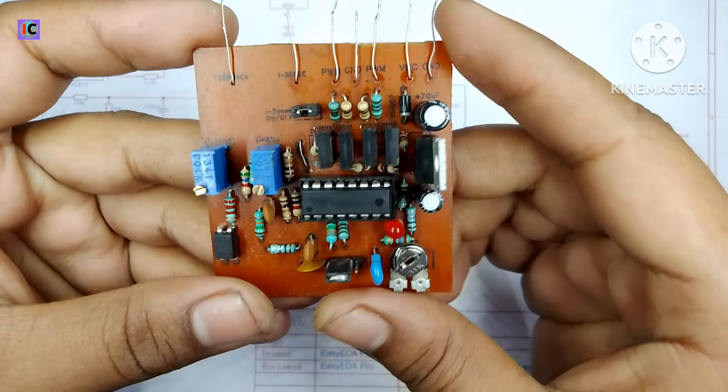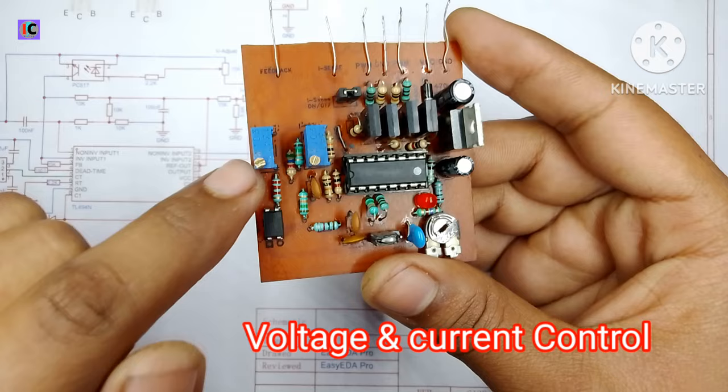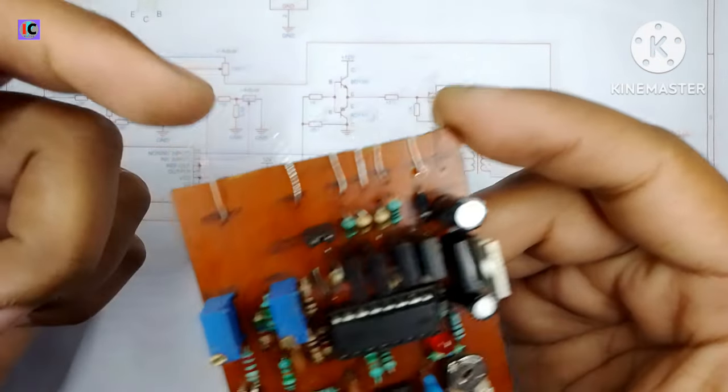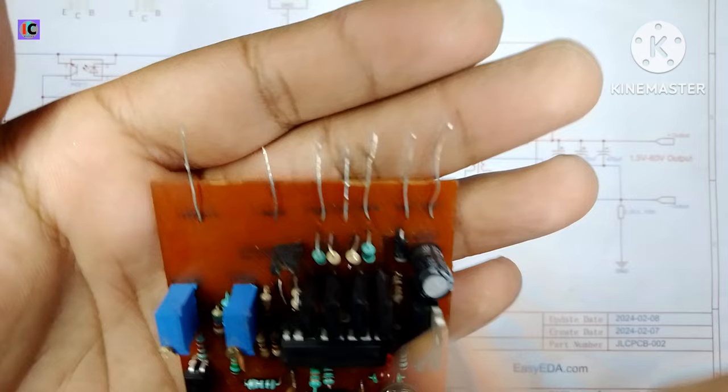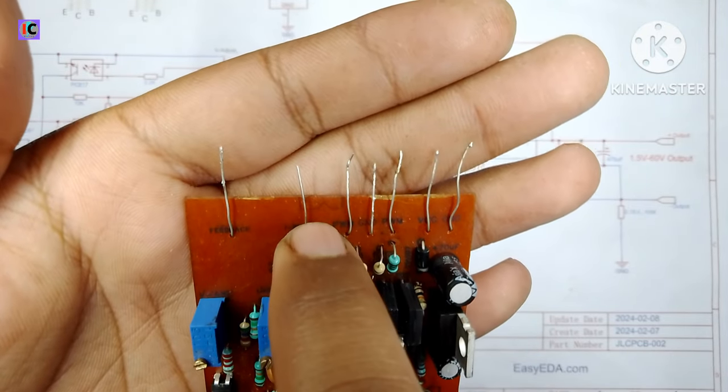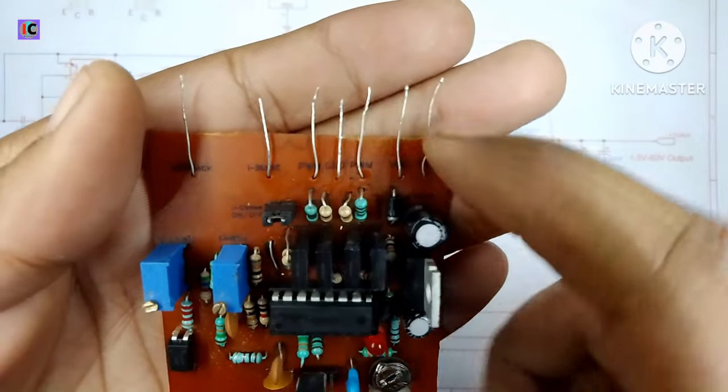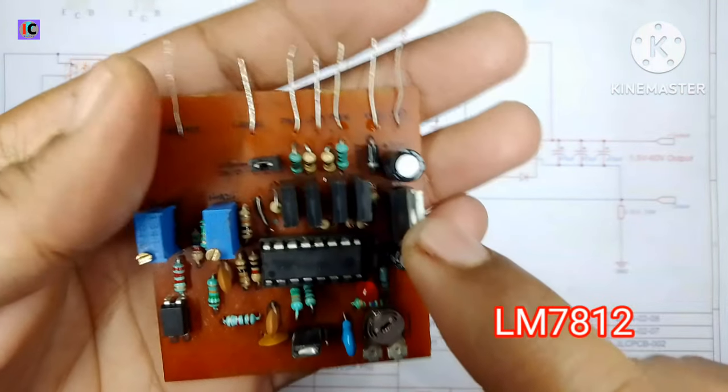Here I have voltage and current control potentiometers of 10 kilo ohm each. The pins are voltage feedback, current, and PWM output pins. We also have a VCC input supporting up to 30 volts because we're using an LM7812 volt regulator IC.